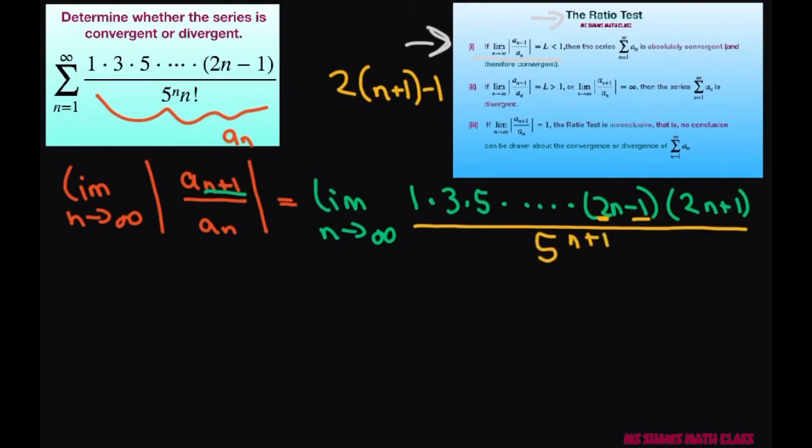And this is going to be divided by 5 to the power of n+1 times (n+1) factorial.